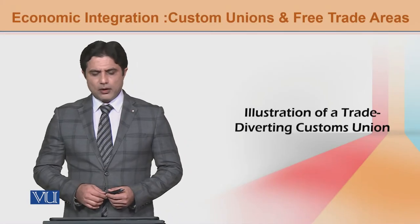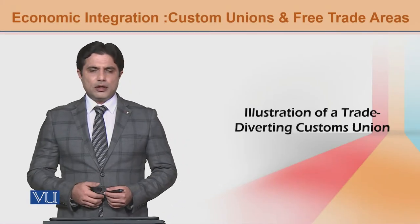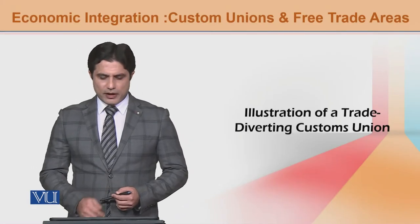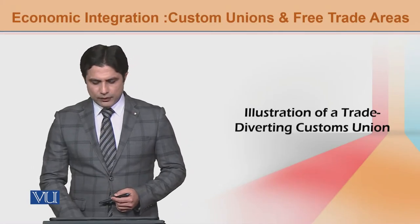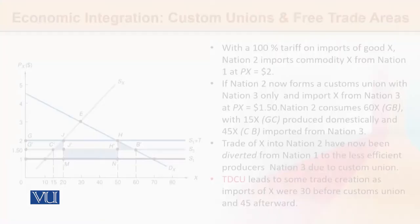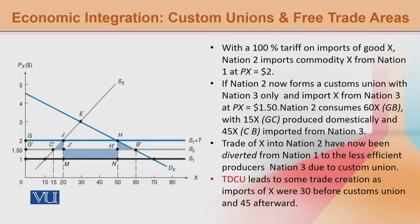In this case, we will illustrate with the help of a graph that we will work with the trade-divergent custom union. Once again, we will talk about Nation 2 — partial equilibrium analysis.